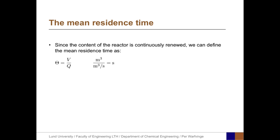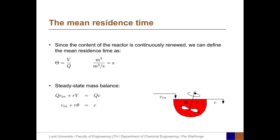Now is the time to introduce the mean residence time. Since the content of the reactor is continuously renewed, we define the mean residence time as θ = V / Q. If we increase V, we increase the residence time; if we increase Q, the flow rate, the residence time decreases. Substituting θ into the steady state mass balance and dividing all terms by Q, we get C_in + R × θ = C.